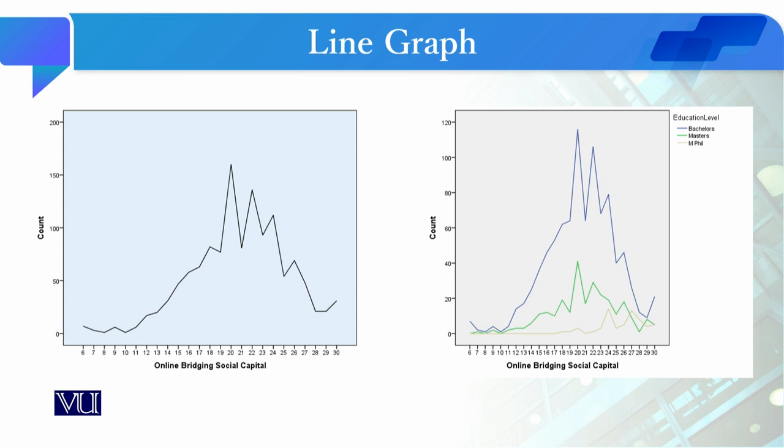If you look at this graph for online bridging social capital scores, this is a simple line graph. It shows the overall respondents' score from value 6 to value 30, displaying the frequency at each score point, from 6 to 30.